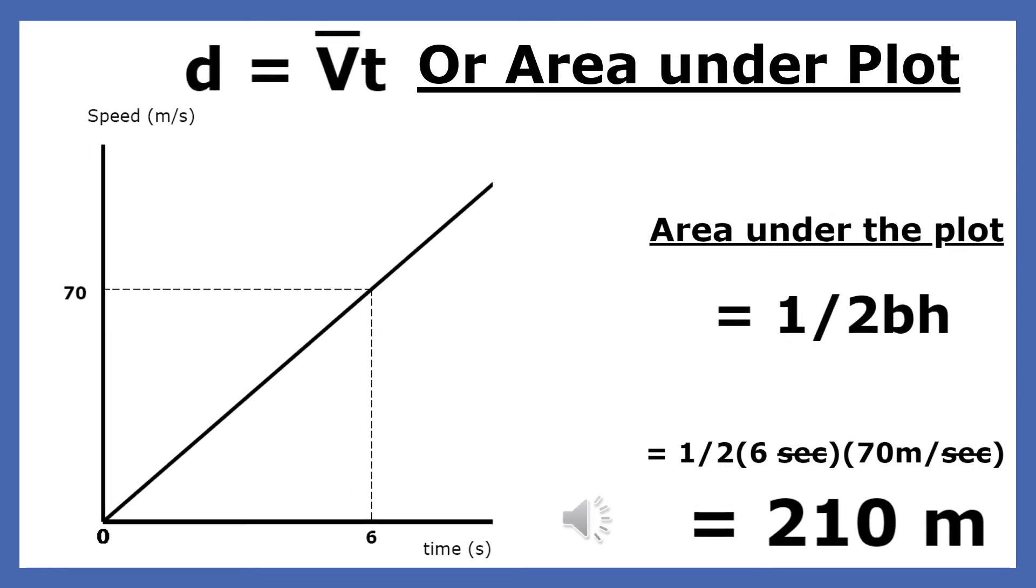A second method for finding the object's displacement that will give you the same results is to find the area under the plot during these two times. The shape under the plot between these two points forms a triangle. The area of a triangle is one half base times height.